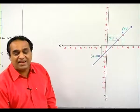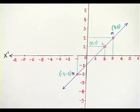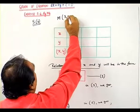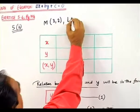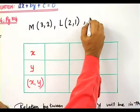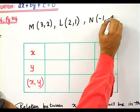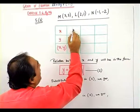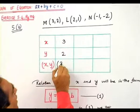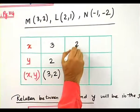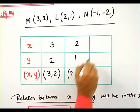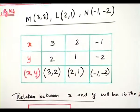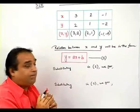So now we have got the coordinates of the three points M, L, and N. So let us write down these coordinates first and then make a table. What is M? M is 3 comma 2. What is L? 2 comma 1. What is N? Minus 1 comma minus 2. We have finished the first part, making the table.